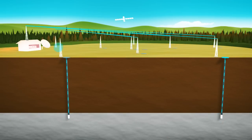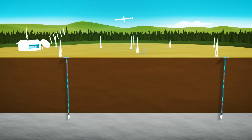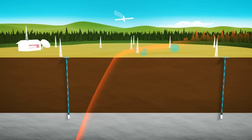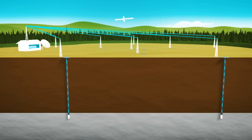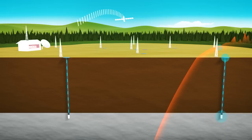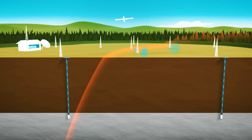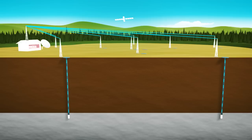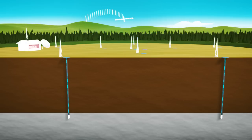Seismic waves arrive at a station, are transformed into electrical signals, which are transmitted to a central recording facility and from there via satellite link to the CTBTO in Vienna. There, data are processed and analyzed immediately upon arrival to clarify the nature of the recorded event.